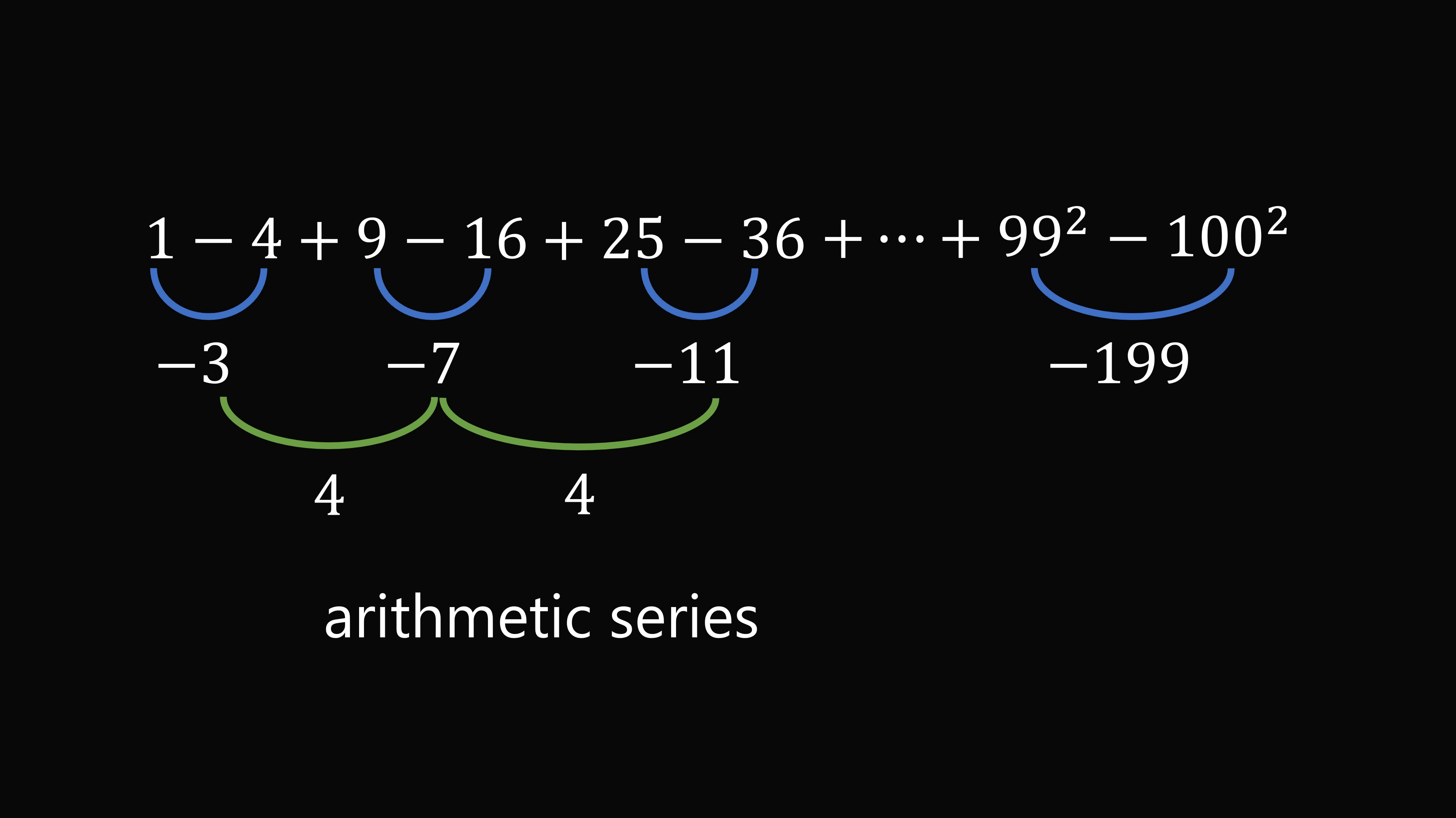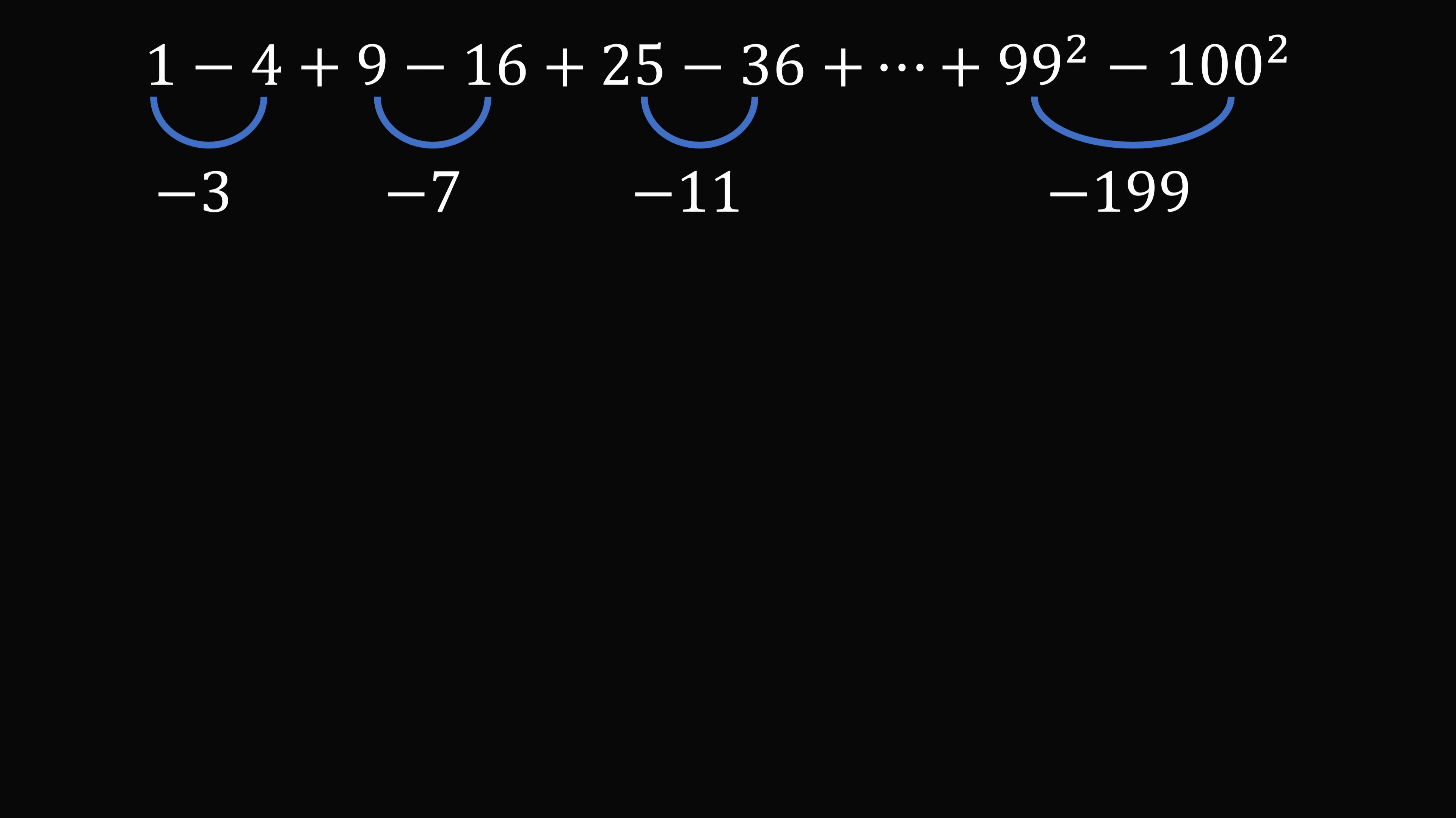Let's now use the formula for the sum of an arithmetic series. We have the average of the first and last terms multiplied by the number of terms. The first term is negative 3. The last term is negative 199. How many terms do we have? The original sum has 100 terms, and we've now paired off the terms. So we're going to have 100 over 2.